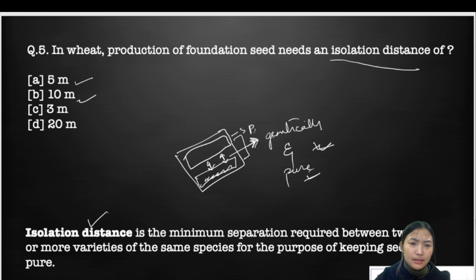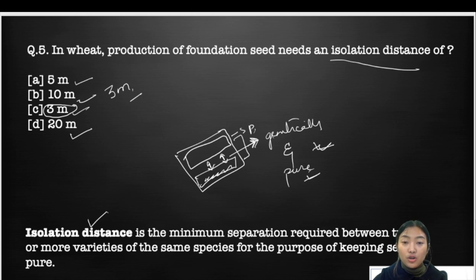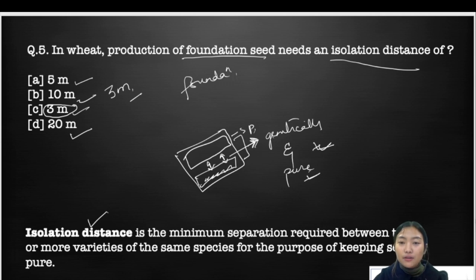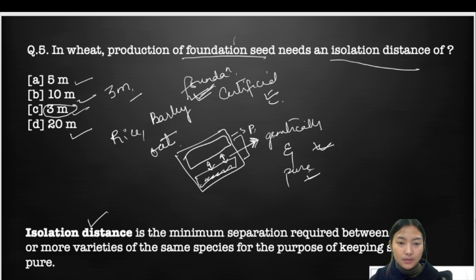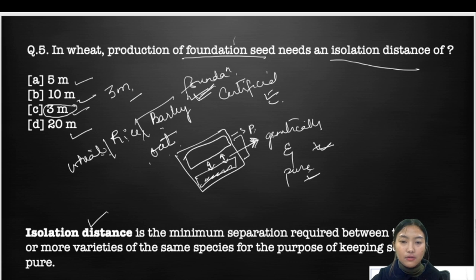In wheat, production of foundation seed needs an isolation distance of: option A) 5 meters, option B) 10 meters, option C) 3 meters, option D) 20 meters. The answer is 3 meters. Note that questions may also ask about certified seed isolation distance. For four crops — rice, barley, oats, and wheat — the isolation distance for both foundation seeds and certified seeds is 3 meters.